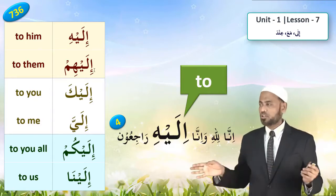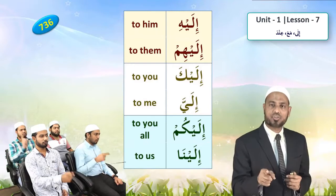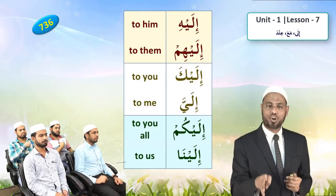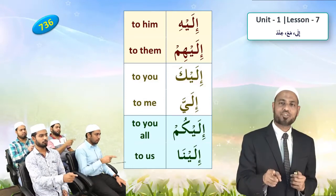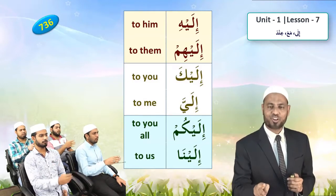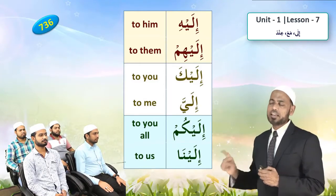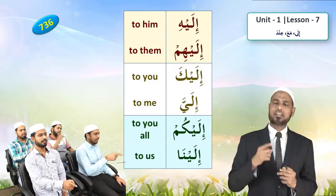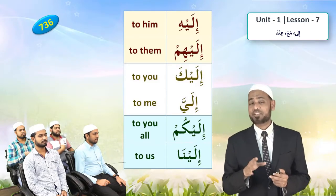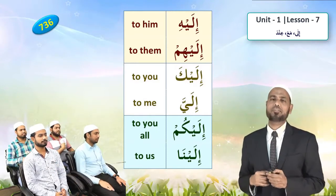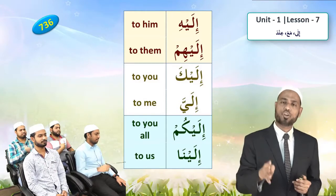Now we will use ilayhi and ilayhim to point towards people. Ilayhi — to him; ilayhim — to them; ilaika — to you; ilaya — to me; ilaikum — to you all; ilayna — to us. Once more: ilayhi, ilayhim, ilaika, ilaya, ilaikum, ilayna. Mashallah. Now repeat after me in Arabic only, thinking about what you are saying.